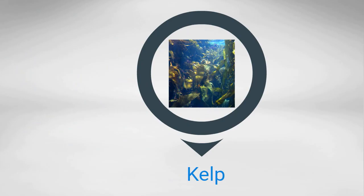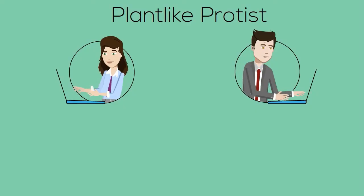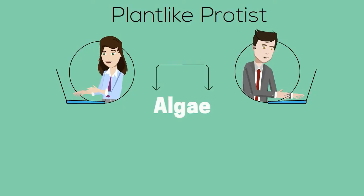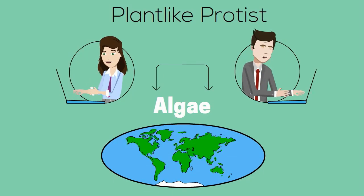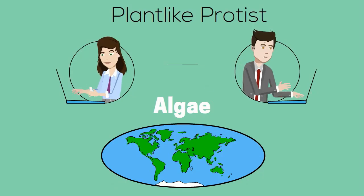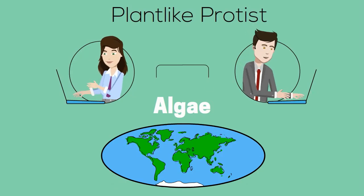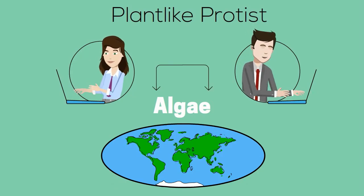So there you go — plant-like protists, which are called algae. They are very important for every ecosystem they are found in, and they help produce a lot of the oxygen that we need here on earth.